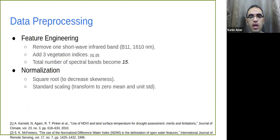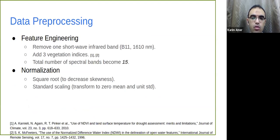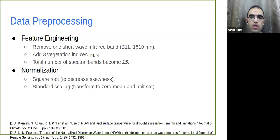For data pre-processing: first, I removed one of the shortwave infrared bands — specifically band 11 at 1610nm wavelength. I also added three vegetation indices including NDVI and NWI. Vegetation indices are commonly used in earth observation analysis to identify areas with large vegetation, and they have also been proven useful for training neural networks in previous works. After this step the total number of spectral bands became 15 instead of 13. The last pre-processing step was normalization — I applied a square root to decrease skewness as shown earlier, and then standard scaling to achieve zero mean and unit standard deviation.